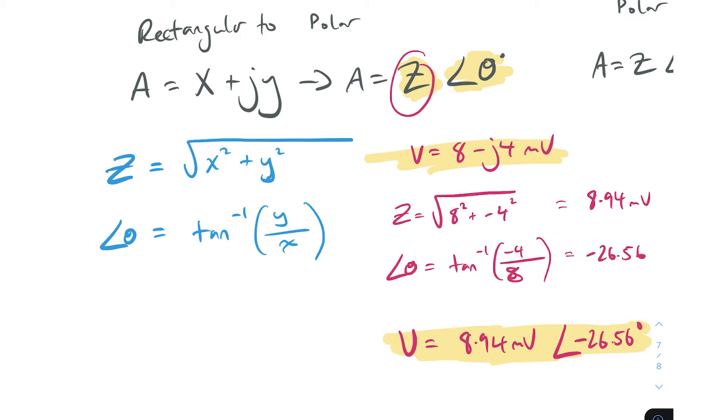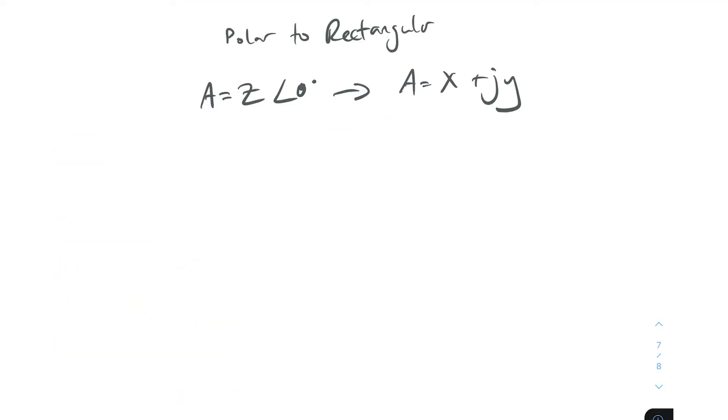Let's do the inverse way now. Let's do polar to rectangular. Here we're trying to find x and we're trying to find y. The j just remains the same always. We've got our Z magnitude and we've got our phase angle, and we want to get that into x and y. What we do is take the magnitude and multiply it by the cosine of the angle. Super simple. For our y component, imaginary component, we take the magnitude and multiply it by the sine of the angle. That's it.